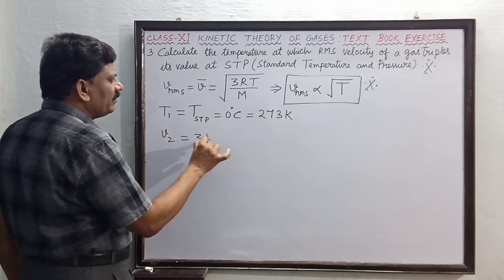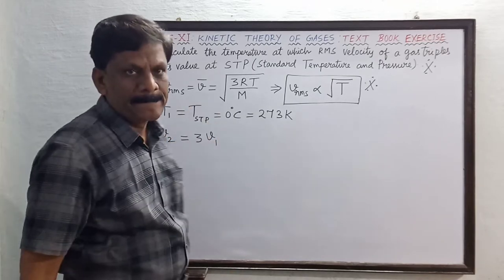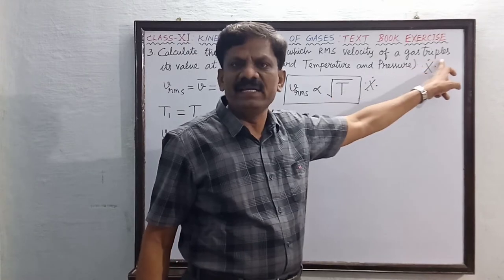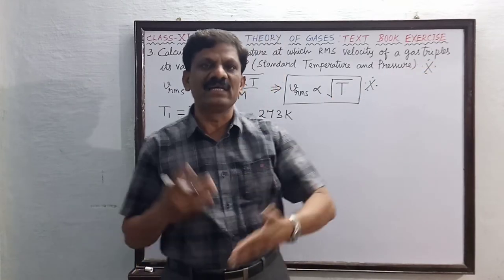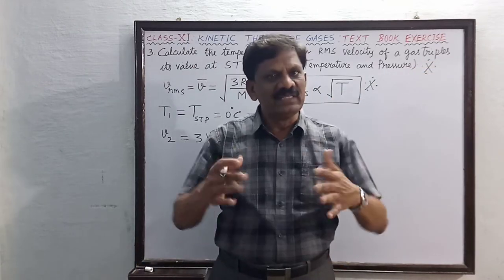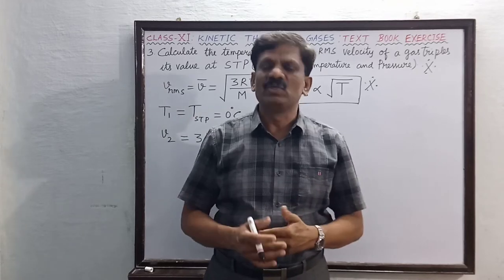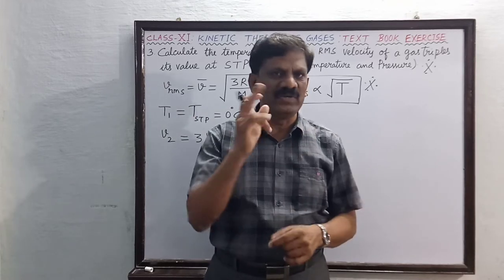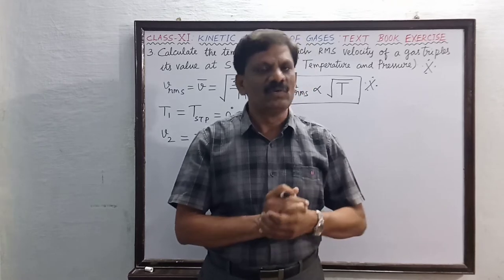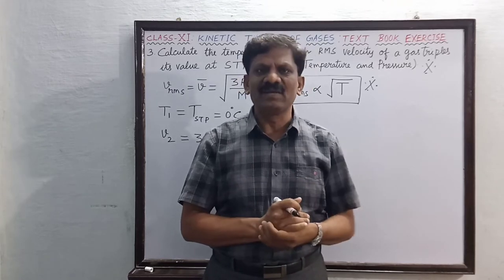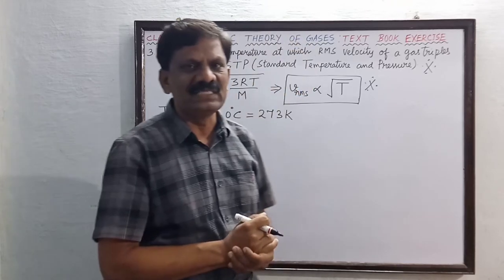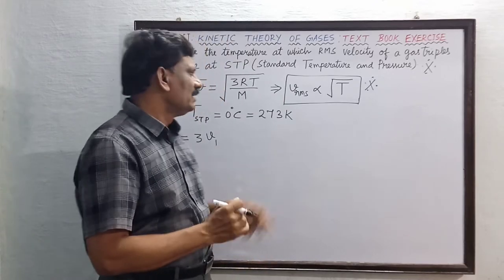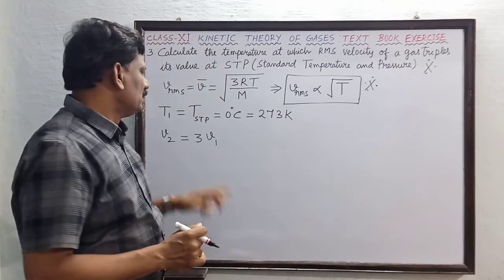If v2 is equal to three times v1, the velocity triples. This is the velocity of the gas at the temperature.